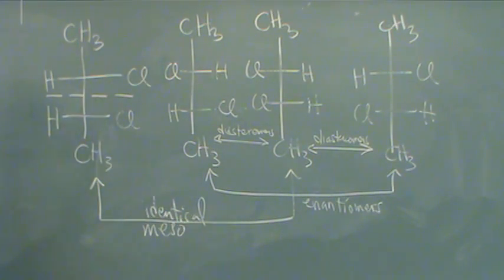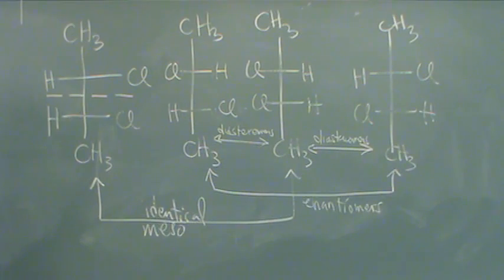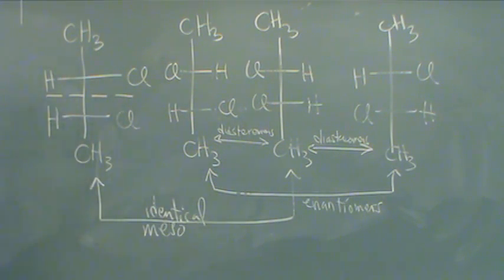A diastereomer is matching up two compounds that are similar stereochemically, but are not enantiomers. And, obviously, not identical to each other.